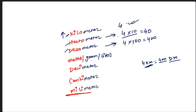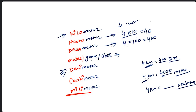Now, 4 kilometers equal to how many meters? Find the difference: from kilometer down to meter. Count: 1, 2, 3, 4 — there are 4 steps. So add four zeros: 4 followed by four zeros. Are you getting it? Yes, sir.